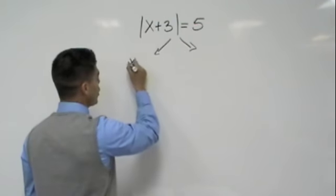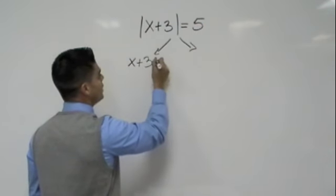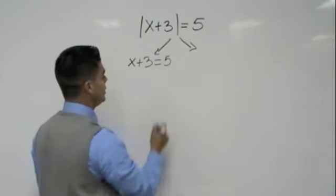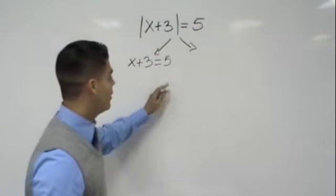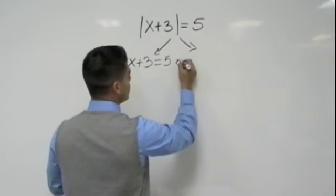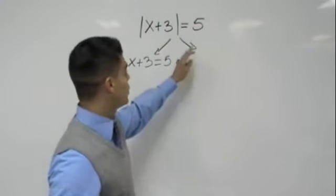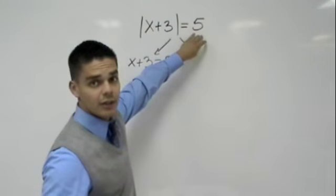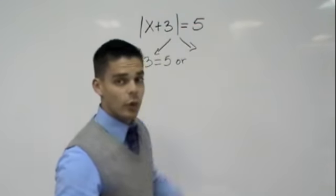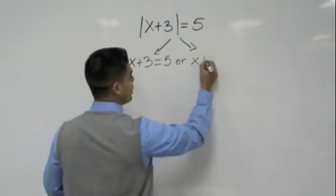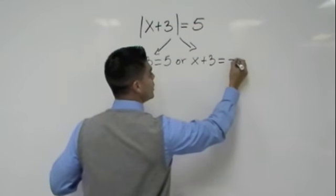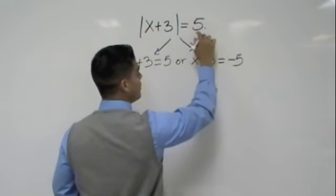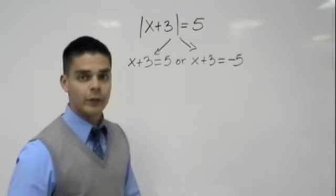So the first one is always the same thing without the absolute value, meaning x plus 3 is equal to 5. Or our other arrow is telling us to write the same thing but making whatever is on the right side of the equation the negative. So we do x plus 3 is equal to negative 5. I make that 5 a negative.